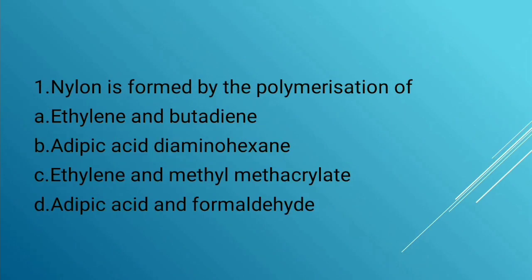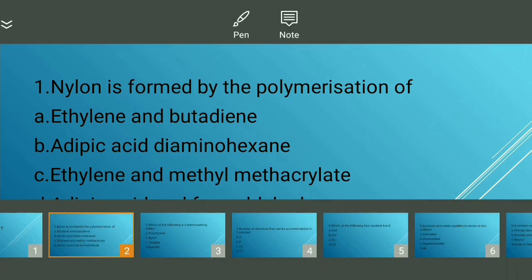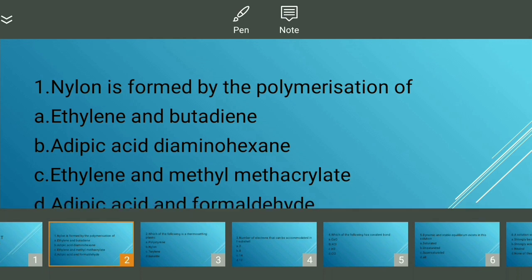First question: Nylon is formed by the polymerization of — options: ethylene and butadiene, adipic acid and diaminohexane, ethylene and methyl methacrylate, or adipic acid and formaldehyde. The answer is adipic acid and diaminohexane.